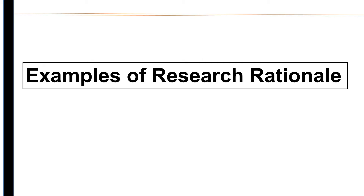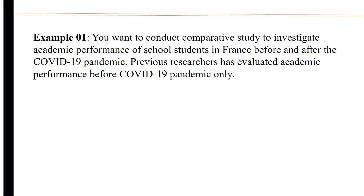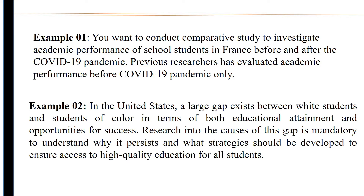Examples of research rationale. Example 1: You want to conduct a comparative study to investigate the academic performance of school students in France before and after the COVID-19 pandemic. Previous researchers have evaluated academic performance before the COVID-19 pandemic only.